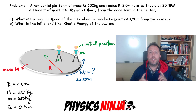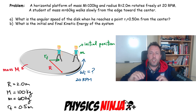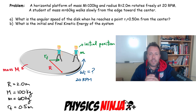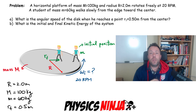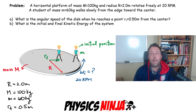Hi everybody, Physics Ninja here. Tonight I want to solve an angular momentum problem where the angular momentum of a system is conserved. We have a merry-go-round, modeled as a solid disk, rotating freely at 20 rotations per minute with radius 2 meters. A student standing at the edge walks slowly toward the middle, finishing at 0.5 meters from the center. We want to find the final angular velocity and examine what happens to the kinetic energy of the system.